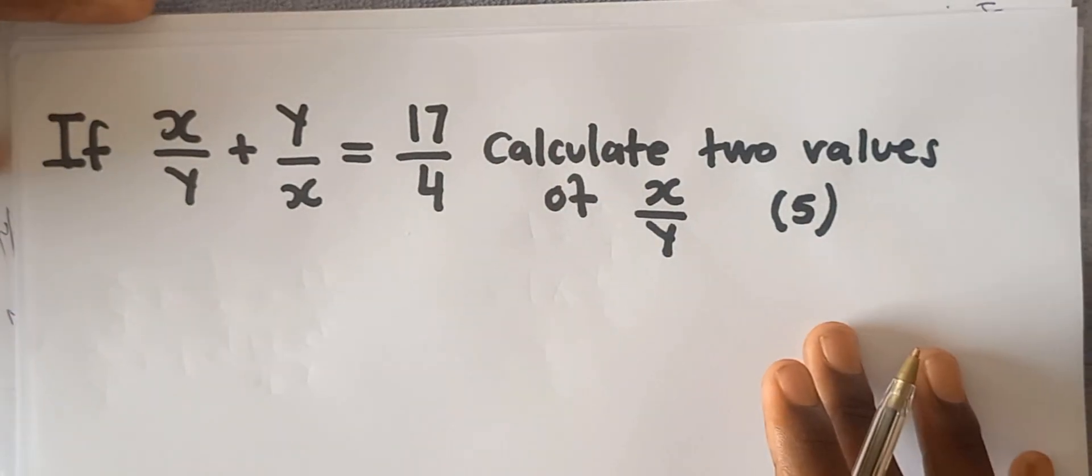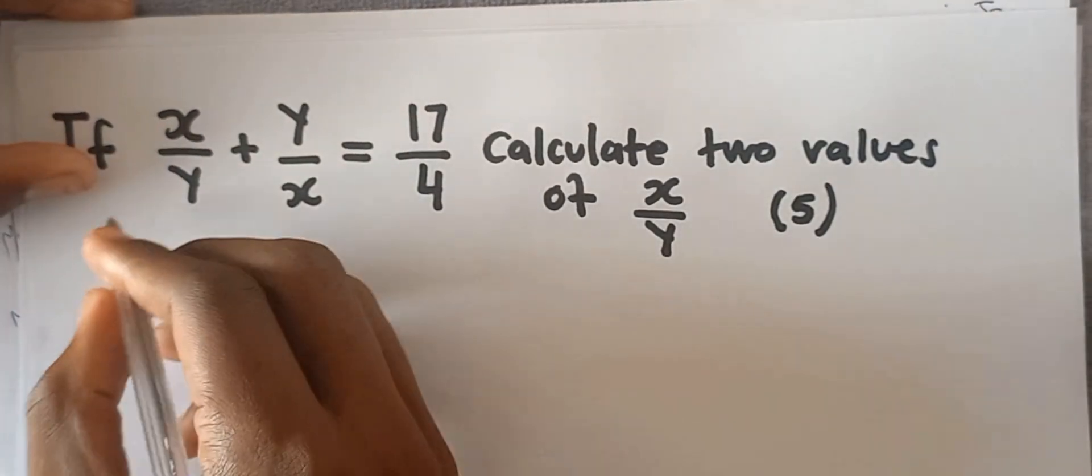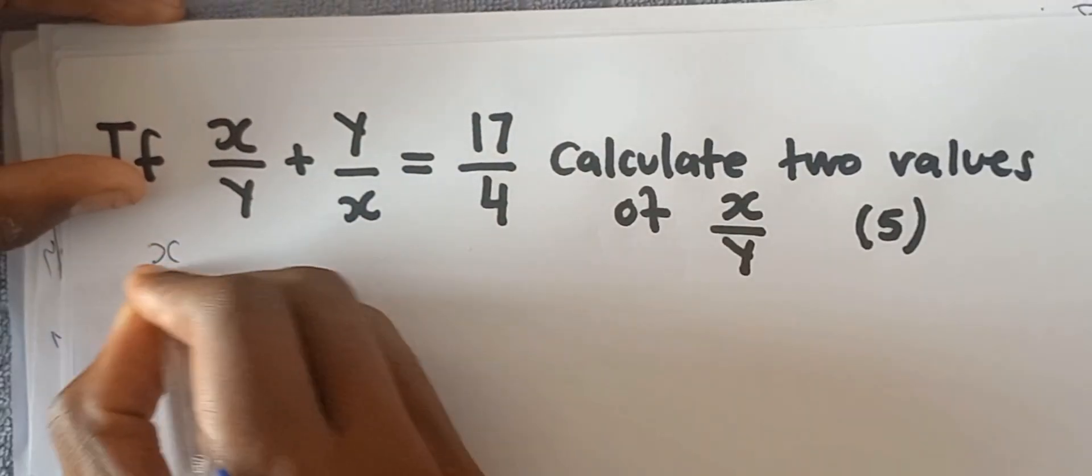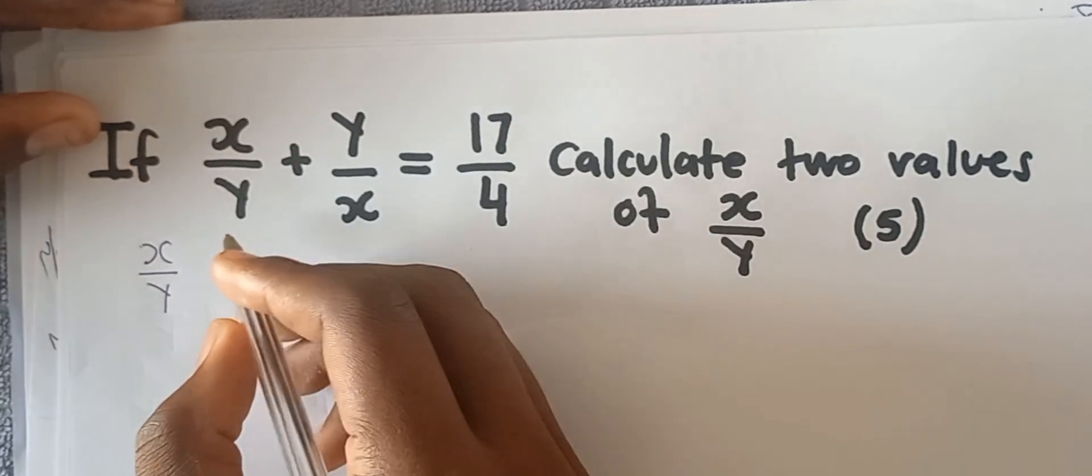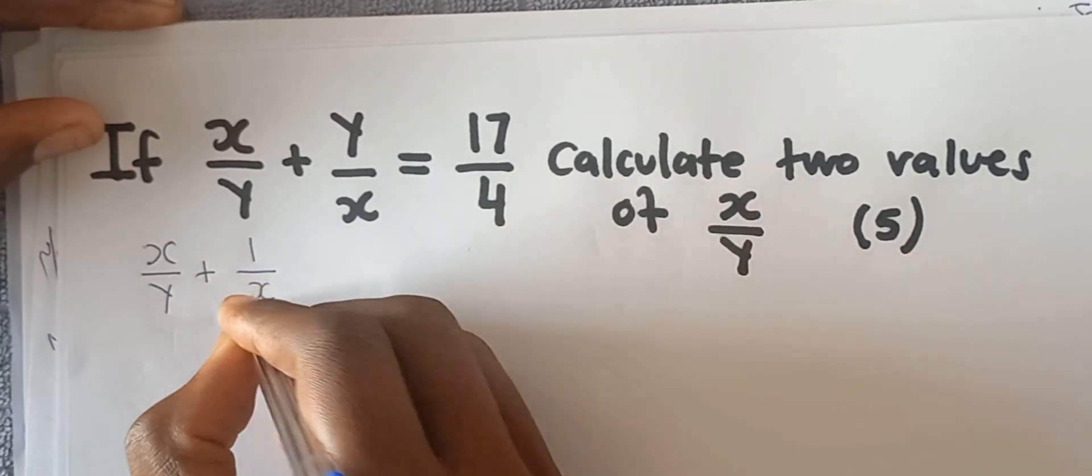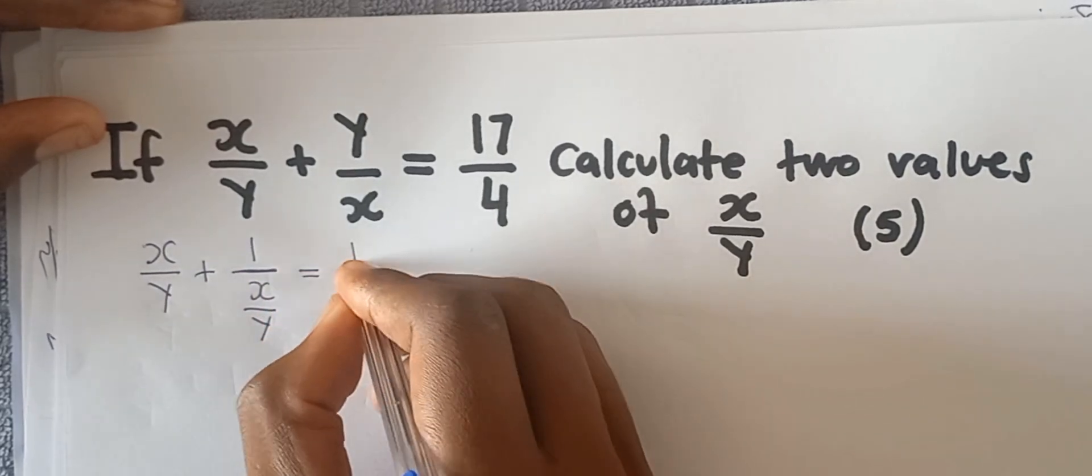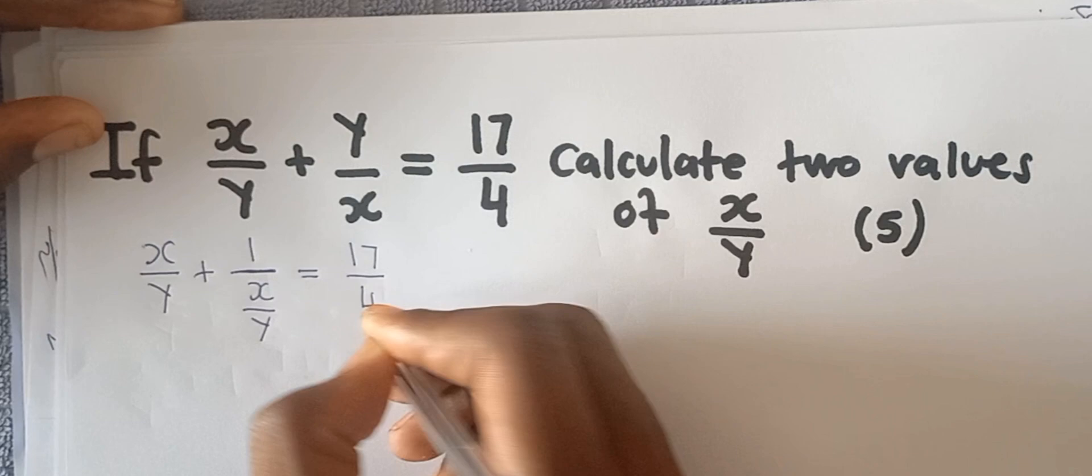It has a solution. We're going to say x over y plus 1 over x divided by y - this is the bigger division - equals 17 over 4.